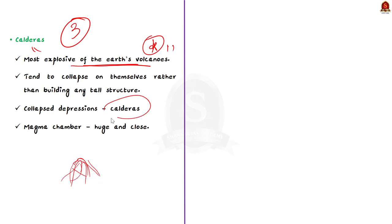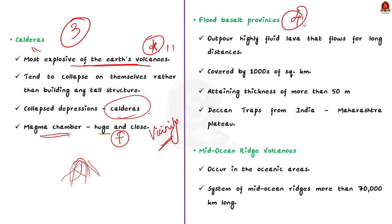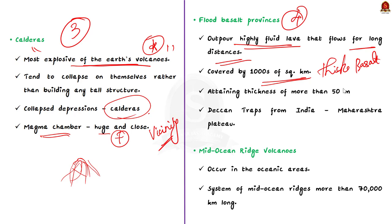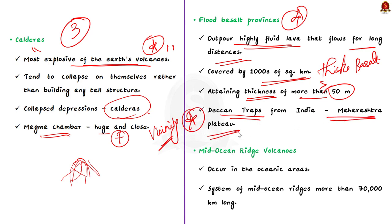The explosiveness of calderas indicates that the magma chamber supplying the lava is not only huge but is also in close vicinity. The fourth type is flood basalt provinces — these volcanoes outpour highly fluid lava that flows for long distances. Some parts of the world are covered by thousands of square kilometers of thick basalt lava flows, with individual flows attaining thickness of more than 50 meters and extending for hundreds of kilometers. The Deccan Traps from India, presently covering most of the Maharashtra plateau, are a much larger flood basalt province, and it is believed that initially the trap formation covered a much larger area than the present.